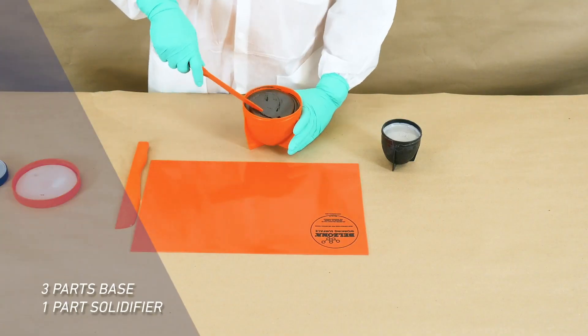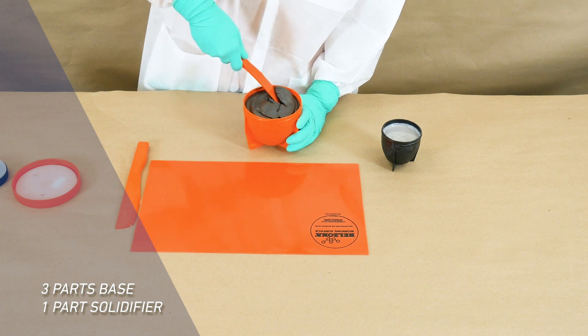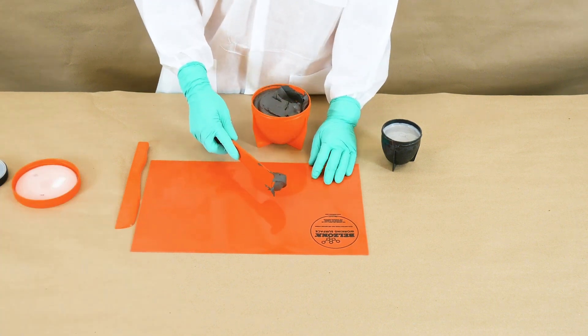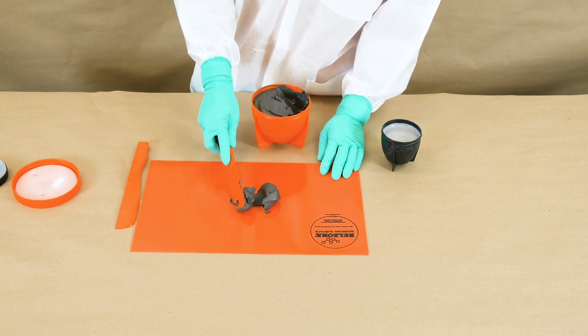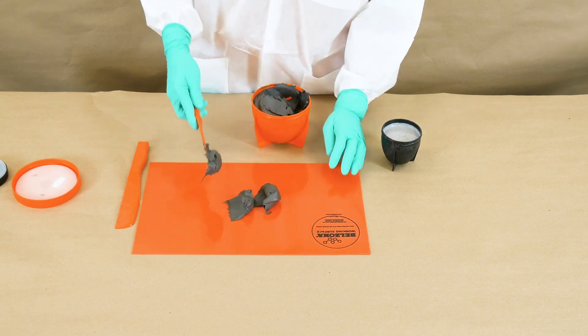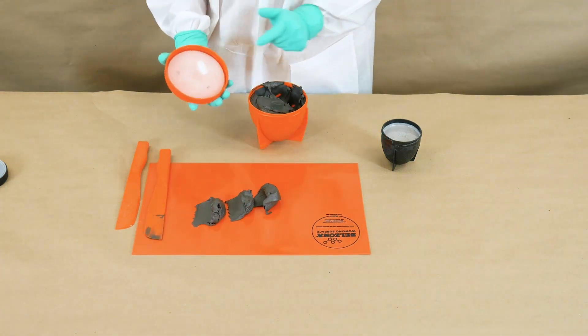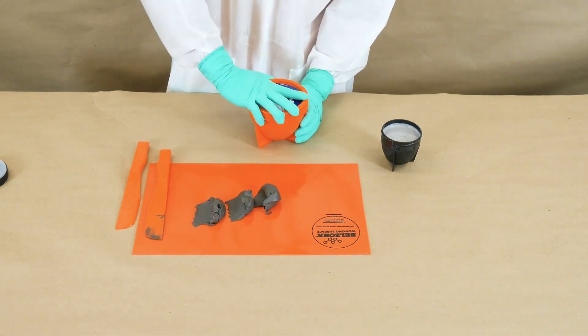Measure three separate parts of Belzona 1111 base and transfer them to the working surface. Place the seal and cap back onto the container to store for further use.